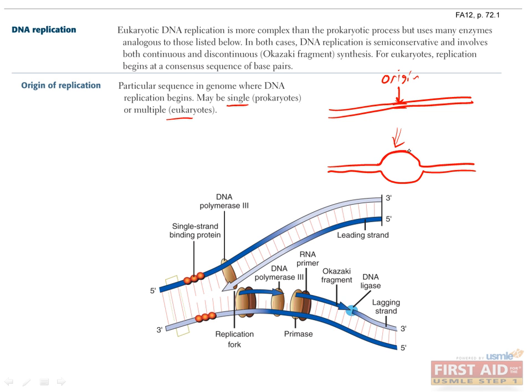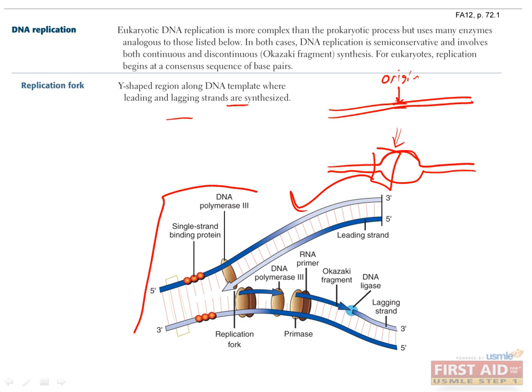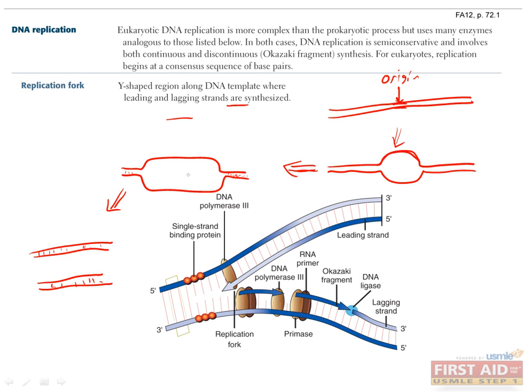At this origin of replication, the two strands of DNA separate and form what looks like a bubble. Each end of this bubble is a replication fork, which you can see a more zoomed in and detailed version of here. As replication progresses, this will expand outward as the new strands of DNA are formed.